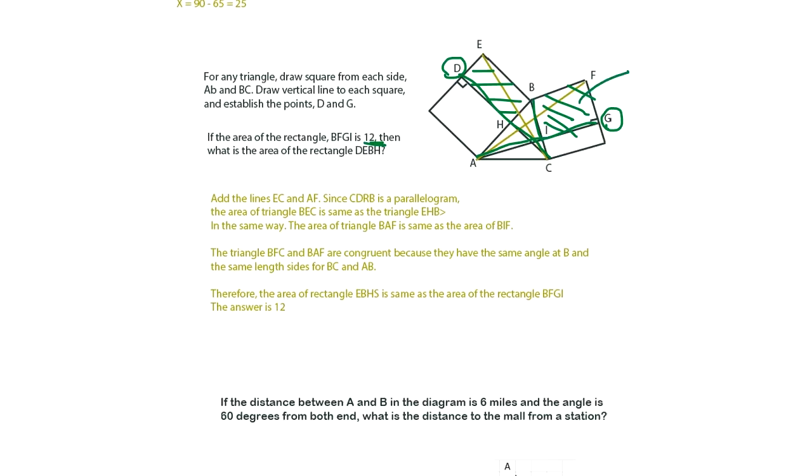So this is 12. That's the only information we have. So we have to find the relationship between this and that. Add the line EC and AF. Here's the line you have to add. The problem, the difficulty of the problem is you cannot figure out which step you take to prove unless you figure out how to add the additional line.